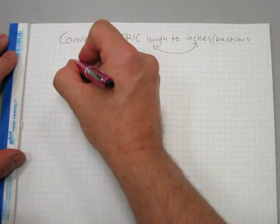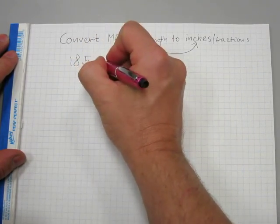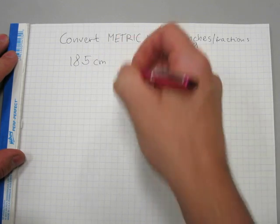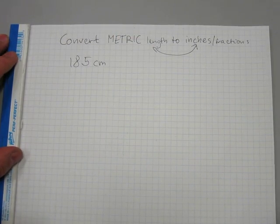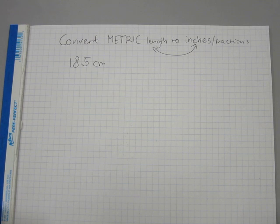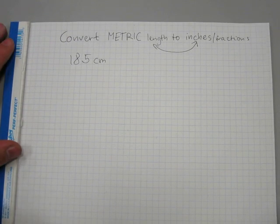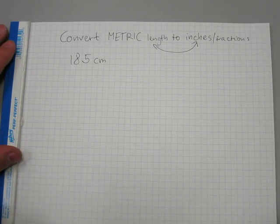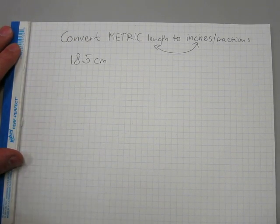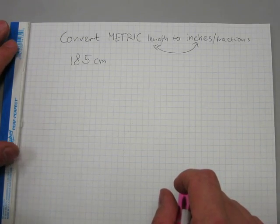Let's say a person says that his or her height is 185 centimeters. What is 185 centimeters in inches or feet or something that relates to those units of measurement?